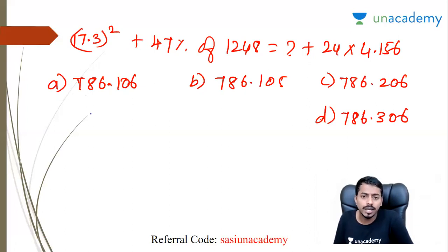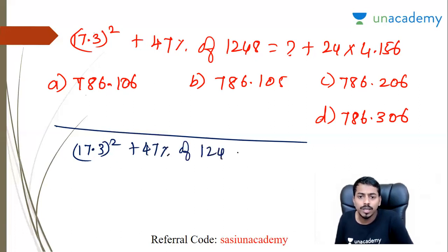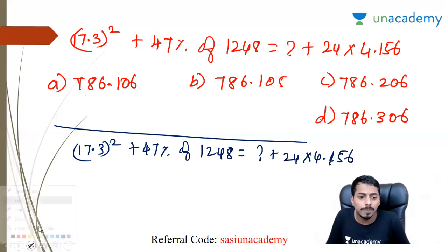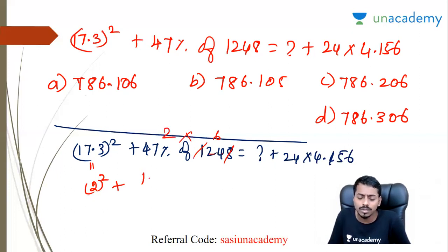17.3 the whole square plus 47 percentage of 1248 equal to question mark plus 24 into 4.156. So if you look at square, 10 plus 1 is 11, 11 square, 2 square. 47 percent, look at half, multiply. 4 plus 1 is 9, 8, so 4 plus 2 is 6. 11 is 2, 6 is 12.